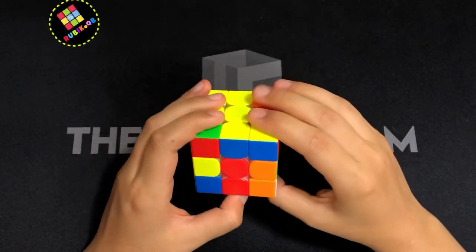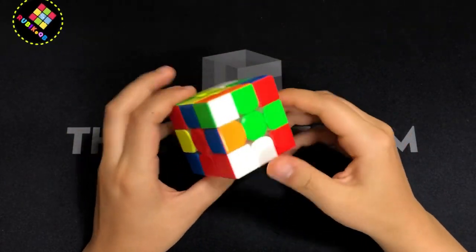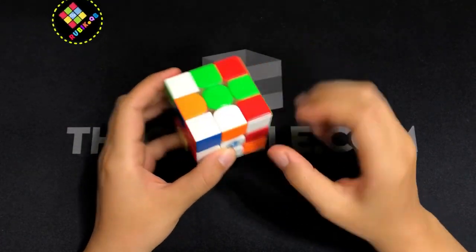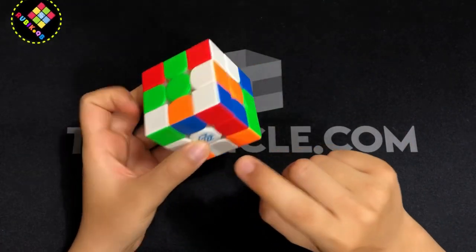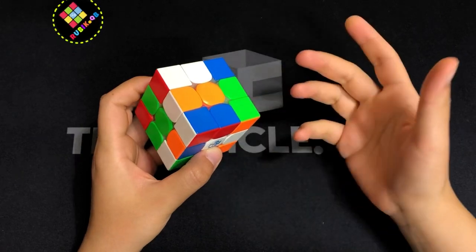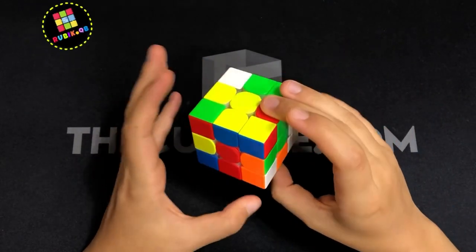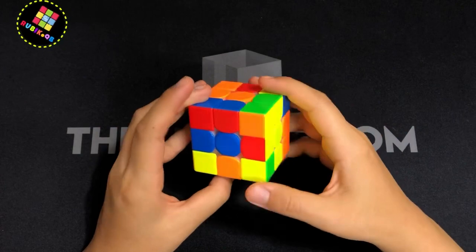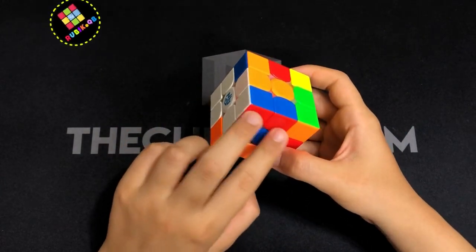But let's just do it again. When he did R', he connected this corner to this edge so he made an F2L pair and then he did B' and R. So here we have a solved pair right here.